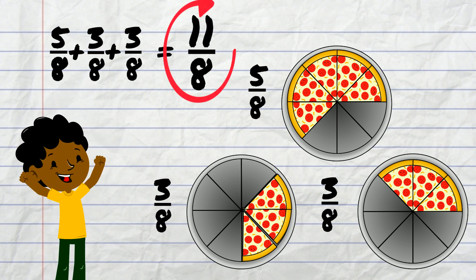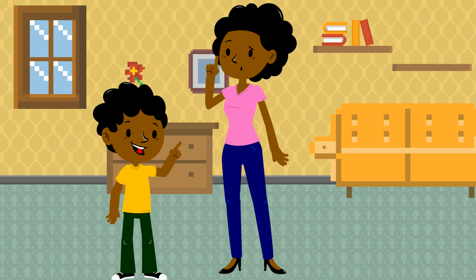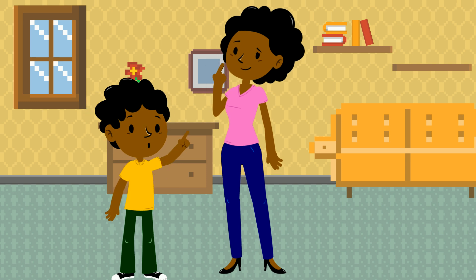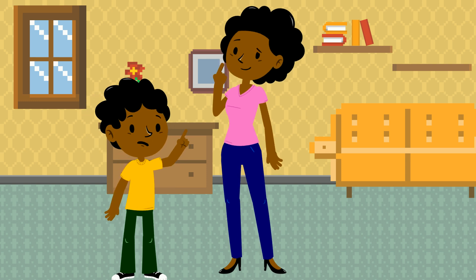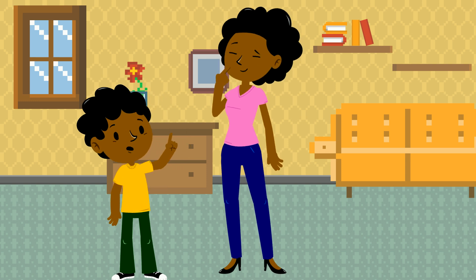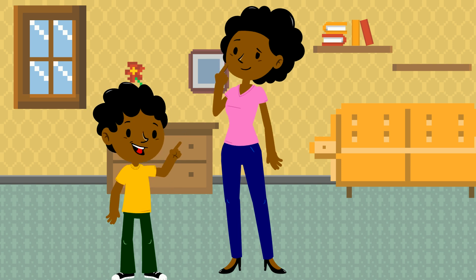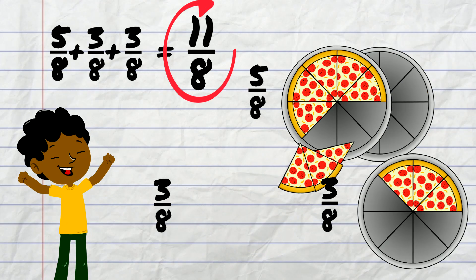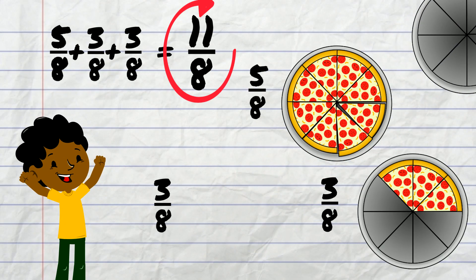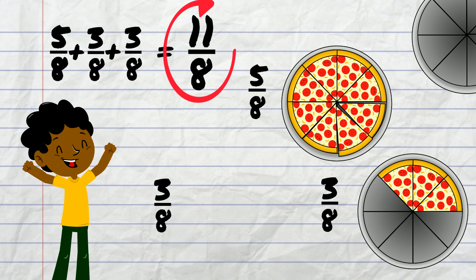11 eighths is a fraction greater than 1. Daniel ran to tell his mom. She asked him if he had at least a whole pizza left. He wasn't sure.